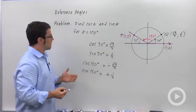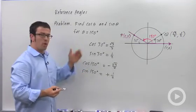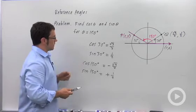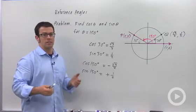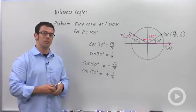And that's it. Reference angles and quadrant. That's how to find the cosine and sine of an angle that's bigger than 90 degrees or smaller than 0.